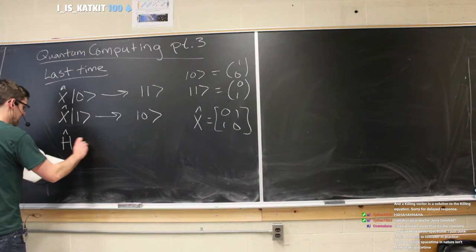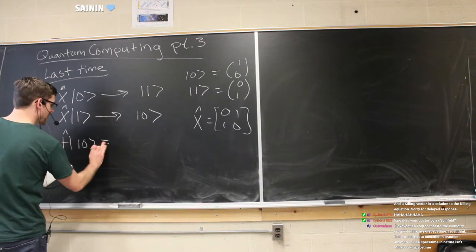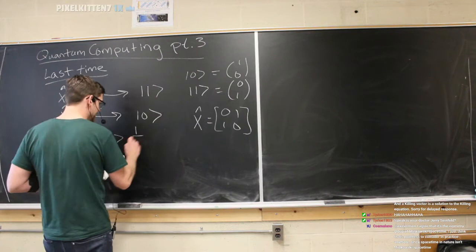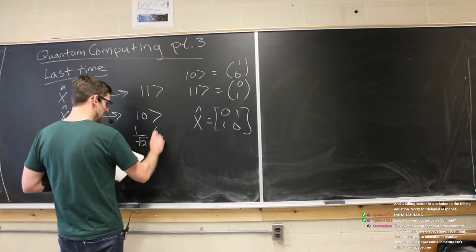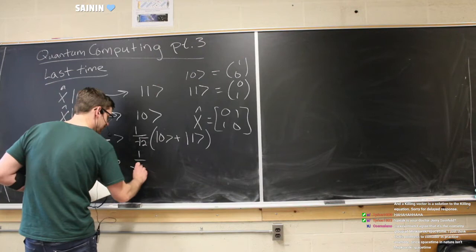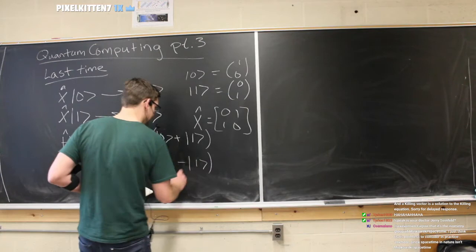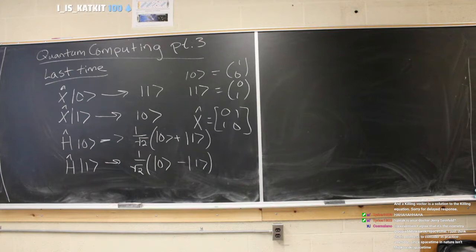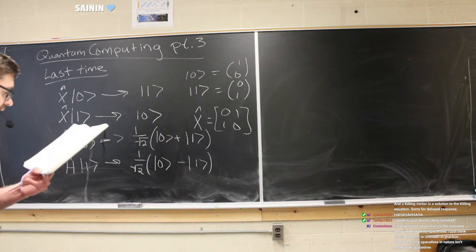There's another very relevant gate — the Hadamard gate — which takes a qubit and puts it into a superposition of both states. We had one over root two as a normalization factor. If you put the Hadamard gate on the zero bit you get one over root two times (|0⟩ + |1⟩), and if you put it on the one bit you get one over root two times (|0⟩ - |1⟩). This is the superposition of the zero and one states as a single qubit.